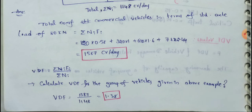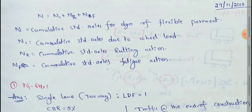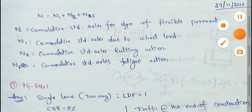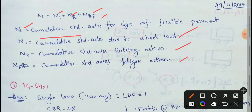For flexible pavement design, we have three types of load. N equals N1 plus Nr plus Nf, where N is the cumulative standard axial load for flexible pavement design. N1 is the cumulative standard axial load due to wheel load. Nr is the cumulative standard axial load due to rutting action. Nf is the cumulative standard axial load due to fatigue action. These are summed to get the total cumulative standard axial load.